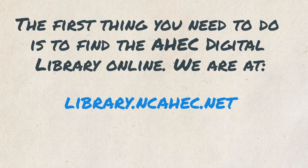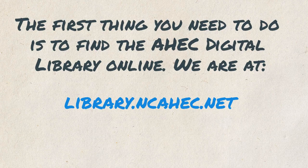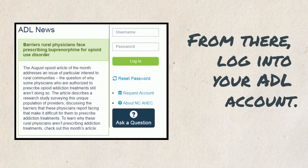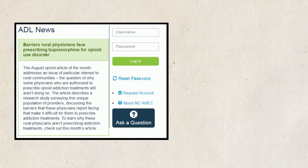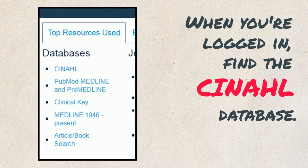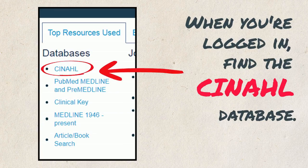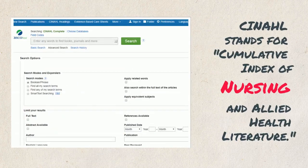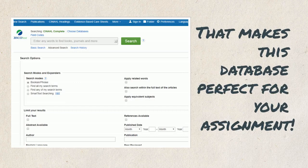The first thing you need to do is find the AHEC digital library online. We are at library.ncahec.net. From there, log in to your ADL account. If you don't have one yet, contact us by using the Request Account link. When you're logged in, find the CINAHL database. CINAHL stands for Cumulative Index of Nursing and Allied Health Literature, making this the perfect database for your assignment.